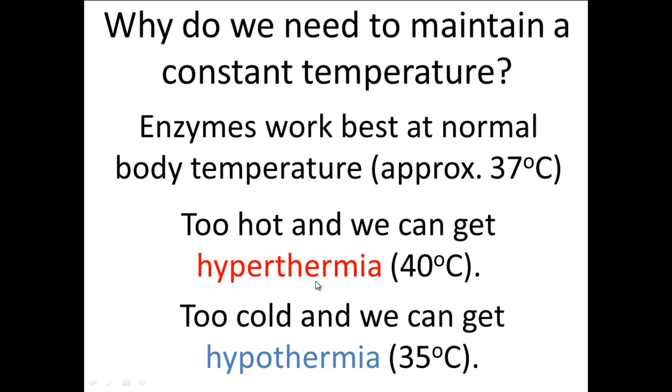Now notice I've mentioned core temperature. Your core temperature basically is your head, your thorax, and your abdomen, because that's where most of the important vital organs are stored. Your extremities—things like your fingers, your toes, your nose, and your ears—those temperatures can fluctuate more.